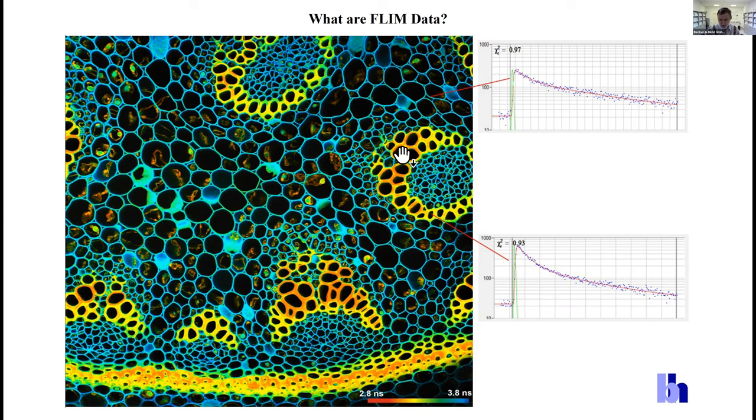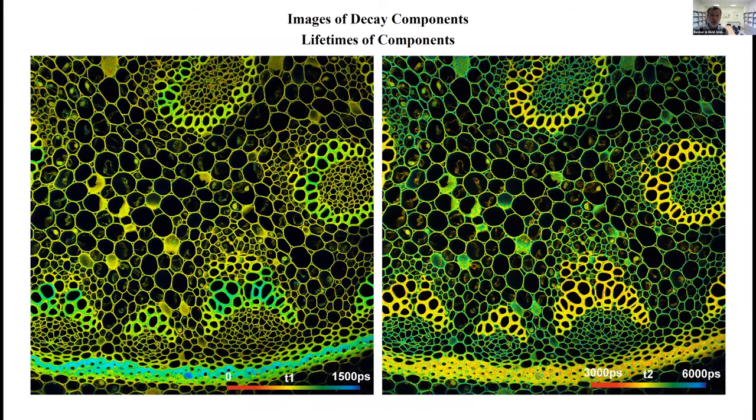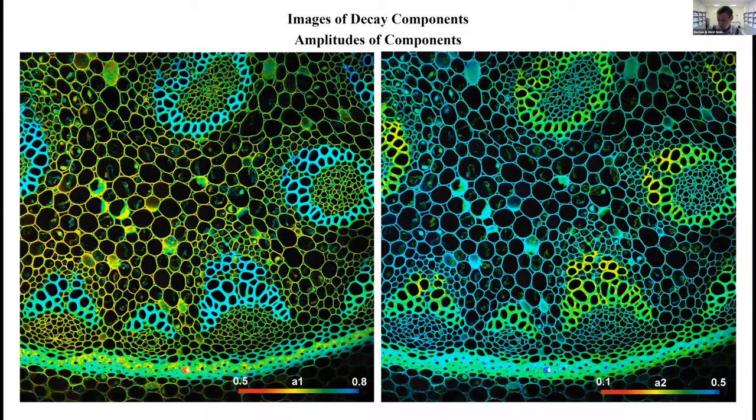In most cases in biology, the fluorescence decay curves are not single exponential, and in those cases you may be interested to see images of the individual decay components. Of course the software does this. These are lifetime images of the decay components and these are the amplitudes of the components, so full information about the decay curves.